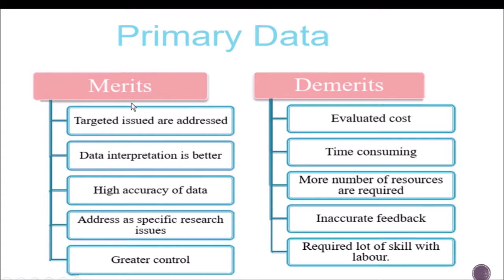The purpose of collecting the data is achieved by collecting primary data, and the objective of the problem is achieved. The demerits or disadvantages include elevated costs — it is much more expensive and time-consuming — because you or other people must go about surveying or observing. More resources are required and sometimes you can get inaccurate feedback, and it requires a lot of skill and labor.